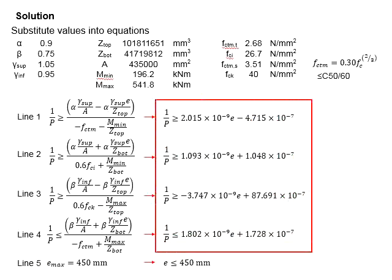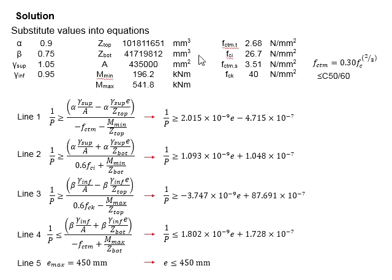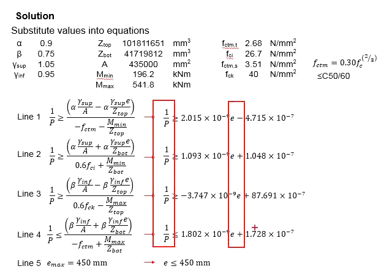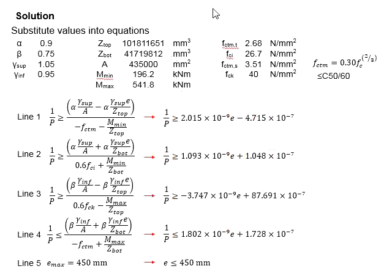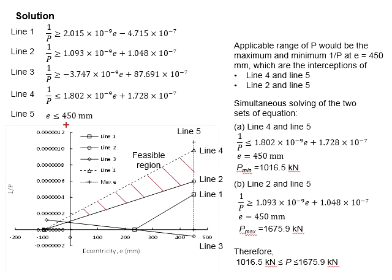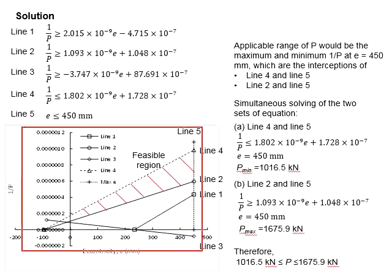From the equation here, you may take the 1/P as the y-axis while the eccentricity as the x-axis. That gives you the y-axis as 1/P and the x-axis as the eccentricity. Now start drawing the lines.